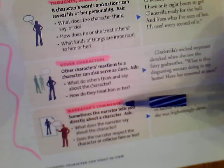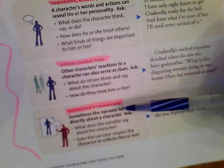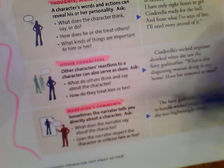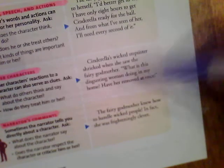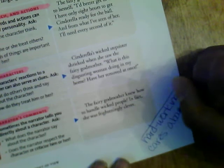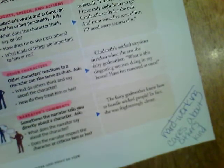The last method of characterization is narrator's comments. Sometimes the narrator tells you directly about a character. Ask: what does the narrator say about the character, and does the narrator respect or criticize him or her? Example: 'The fairy godmother knew how to handle wicked people. In fact, she was frighteningly clever.' So based on all four methods — physical appearance, thoughts and speech and actions, other characters, and narrator's comments — I know the fairy godmother is hard-working, cares about others, and is kind.